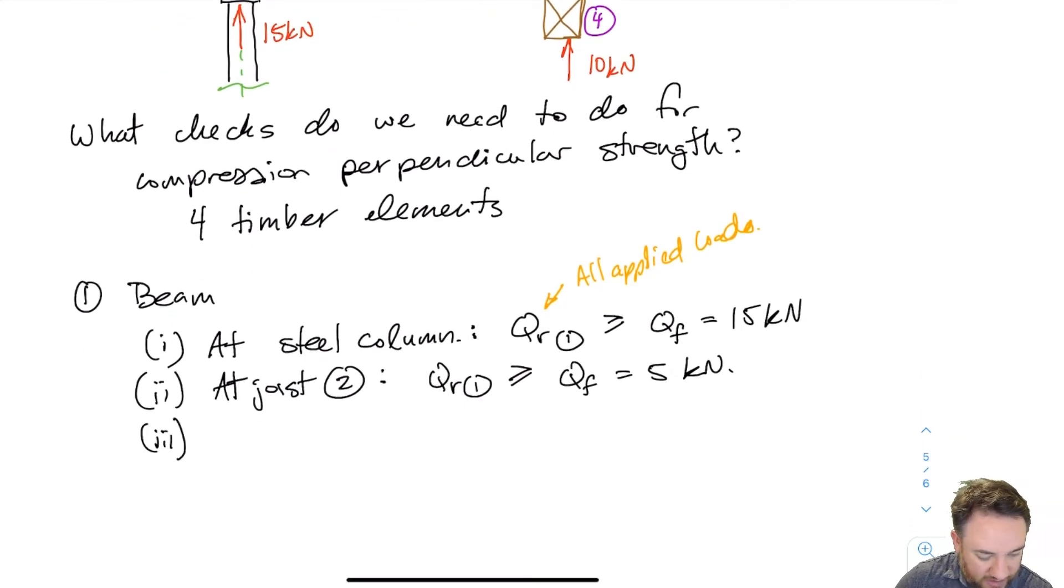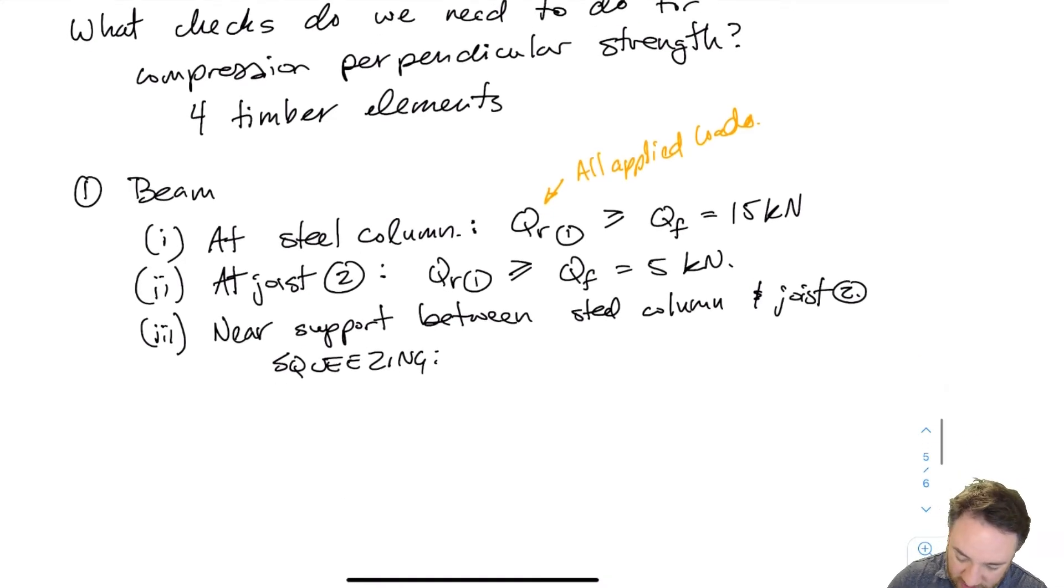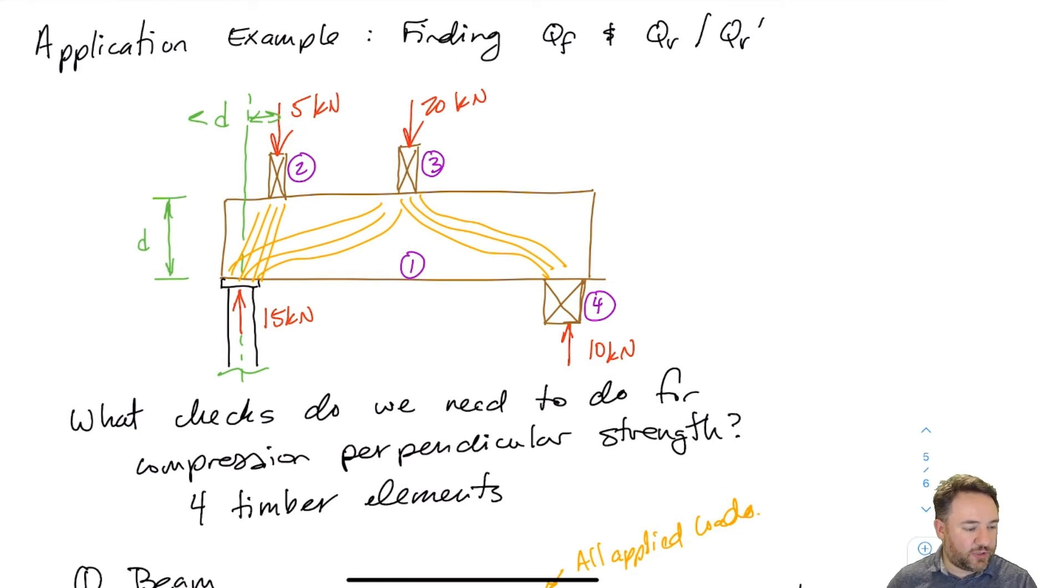Then the third, and this is the tricky bit now, is near the support between the column and the joist and joist two. So this is the squeezing, the squeezing check. So this one is going to be qr one. It's still one, but this is prime. So that's because this is a two thirds. It's the one with the two thirds. And this one has to be greater than or equal to what? Well, what I have to do here is I have to look at what is the load that's going through the beam from top to bottom. So here there's two different sources of load that go to the support 15 kilonewtons.